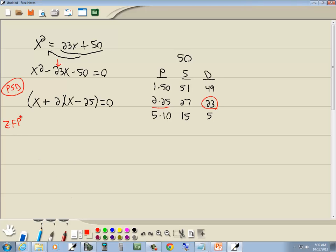Okay, zero factor property. It says you get zero on one side, you factor the other side, you set each factor equal to zero. So I'll set x plus 2 equal to zero, and I'll set x minus 25 equal to zero.